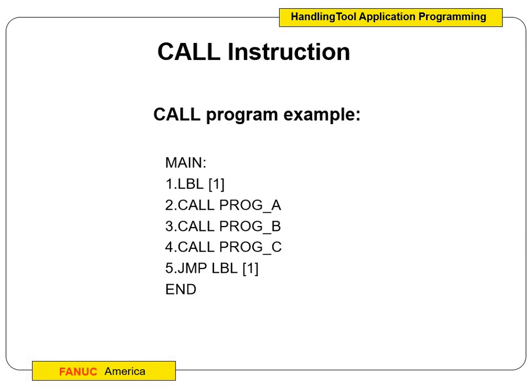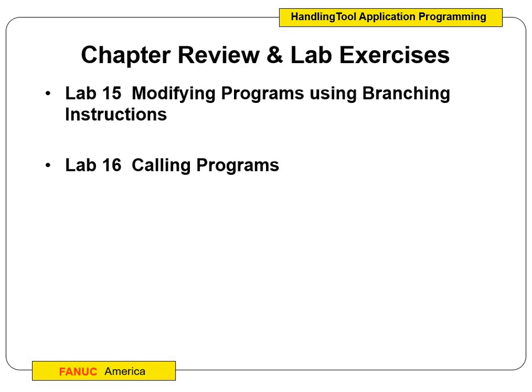For the next lab, you're going to take the programs you made — a box program, a circle program, and a triangle program — and write a call program. It will start with label 1, then: call triangle, call box, call circle, then jump label 1. This constantly loops through the program drawing triangle, box, circle, repeatedly. You'll do this in lab 15 and lab 16, modifying your programs using branching instructions — unconditional ones using label and jump label.